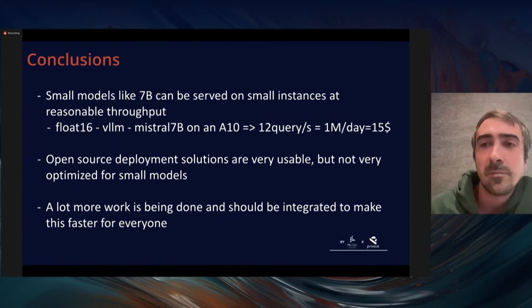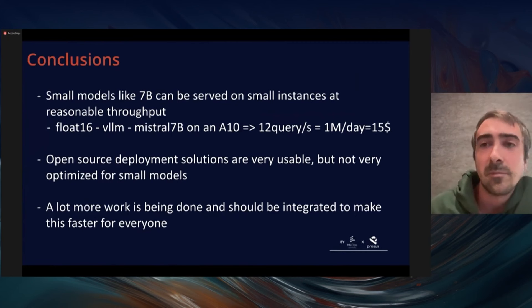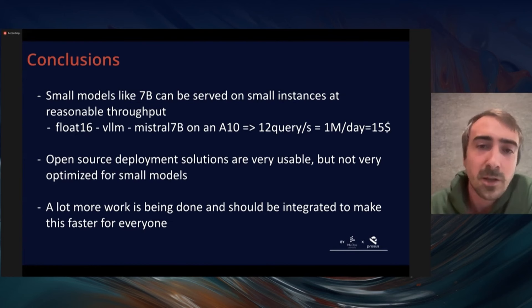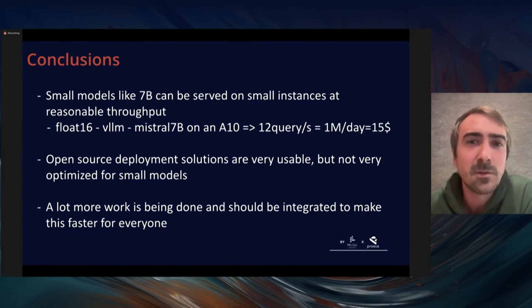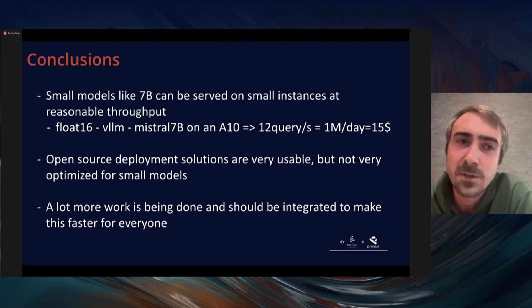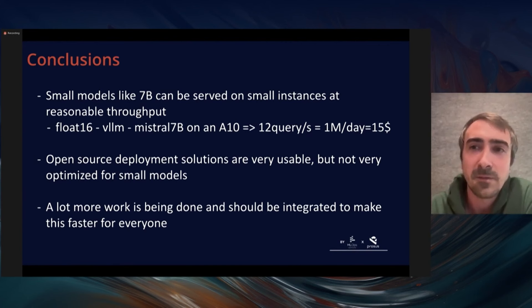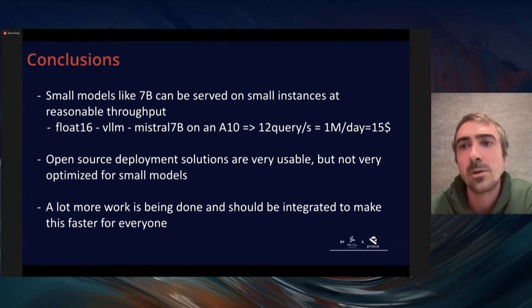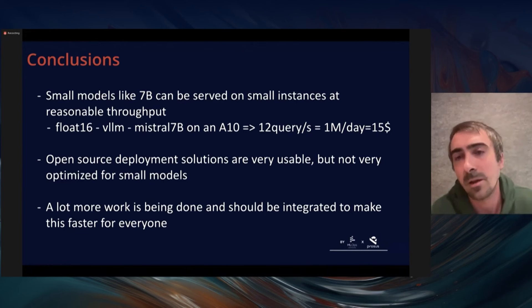To conclude: it's really easy to serve small models on small instances with open source code. Without doing anything special, I can get Mistral 7B on an A10 to serve a million requests for about $15 a day. Changing precision would roughly double the requests served. The open source deployment solutions have done an amazing job being usable. There's a lot of work still to be done on the model code side, and I think things will just keep getting faster for everyone.